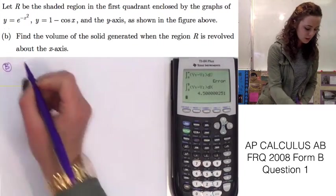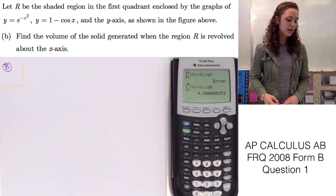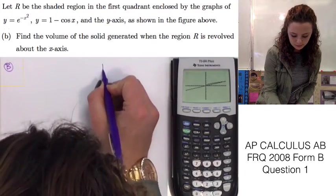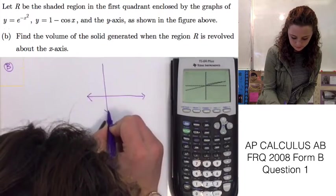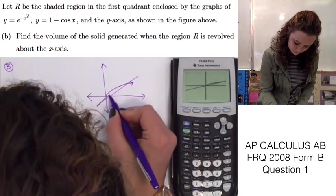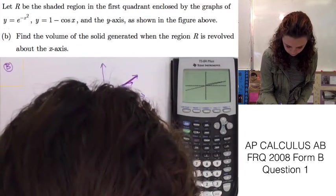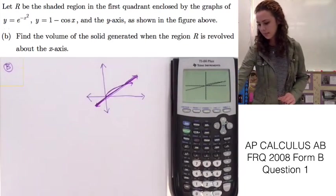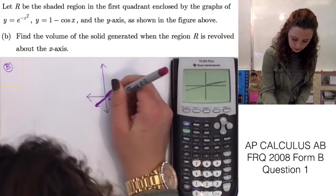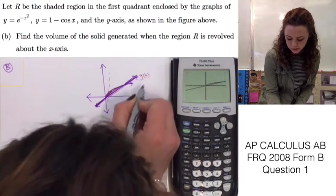On to part B. In question B, it asks us to find the volume of the solid generated when R is rotated along the vertical line x equals negative 1. Let's sketch our graph so we can better see what this might look like. Area R is right here, and x equals negative 1 will be about there. This is function g of x, which is Y2, and this is f of x.